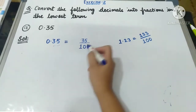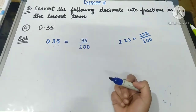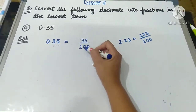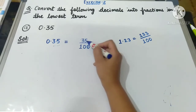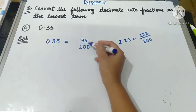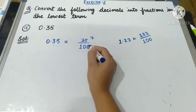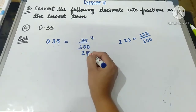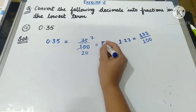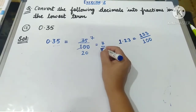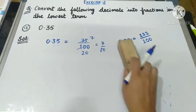Now let us see if this fraction can be reduced to its lowest term. Yes — 35 is in the table of 5, and 100 can also be divided by 5. So dividing: 5 sevens are 35 and 5 twenties are 100, giving us 7 upon 20. In this way, we convert a decimal into a fraction in lowest terms.